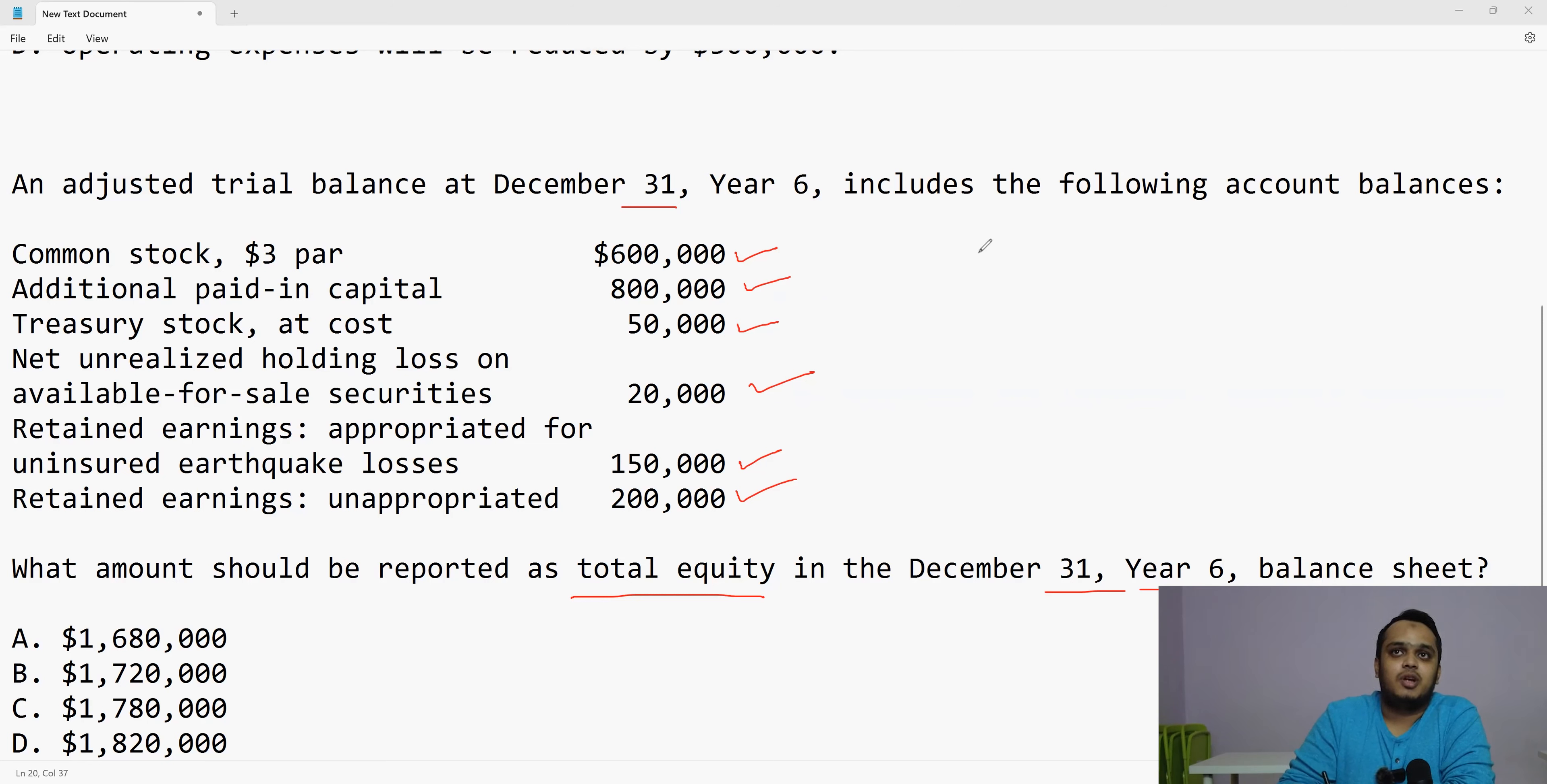Just see it here. Common stock? Yes. Additional paid-in capital? Yes. It comes under my equity. Treasury stock. Treasury stock is that stock which I have bought back. Now that stock, what should I do? I should minus it from my equity. So let me just put that into brackets. 50,000 minus. Then net unrealized holding loss on available for sale securities. Then again, it is a loss for me. This loss should also be deducted. And then this retained earnings should be included and retained earnings unappropriated should also be included.